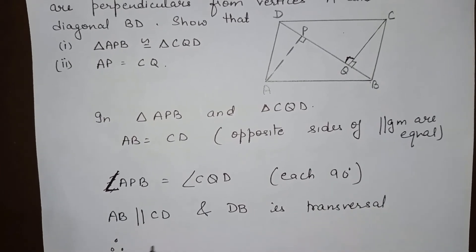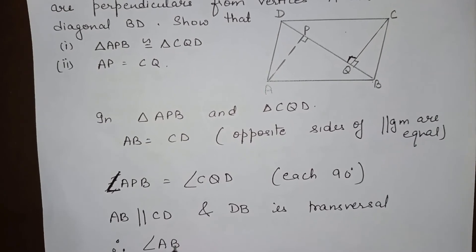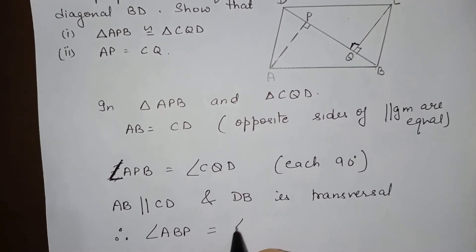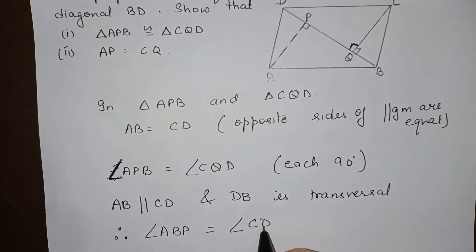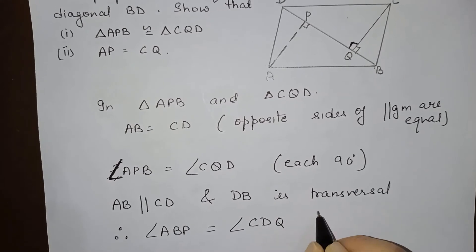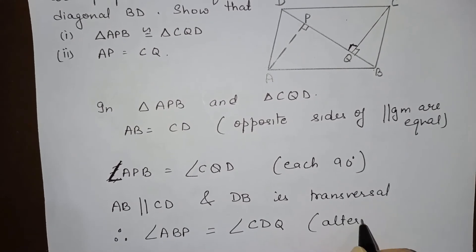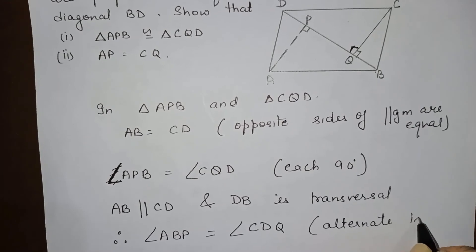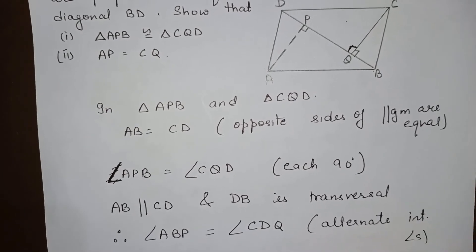Therefore we have angle APB is equal to angle CDQ. They are alternate interior angles.